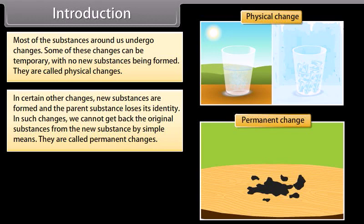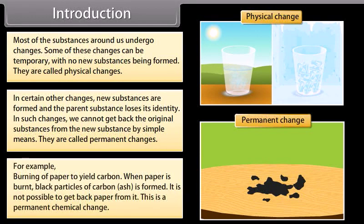These are called permanent changes. For example, burning of paper to yield carbon — when paper is burnt, black particles of carbon ash are formed. Now it is not possible to get back paper from it. This is a permanent chemical change.